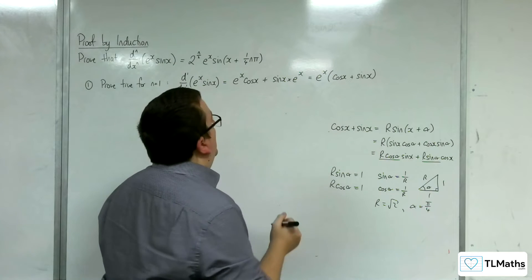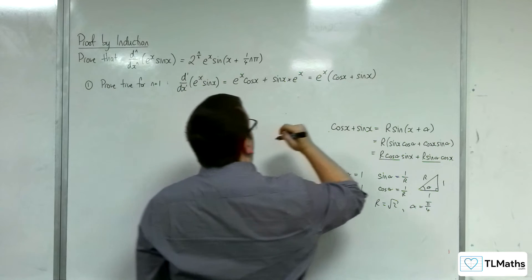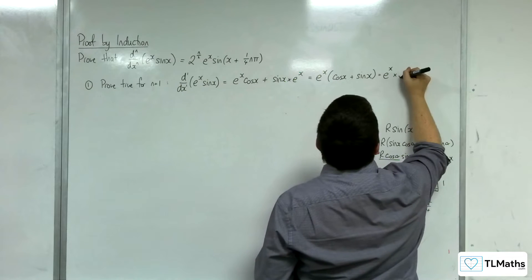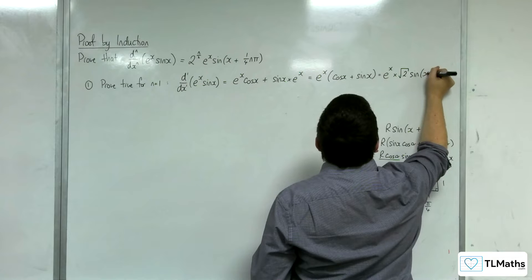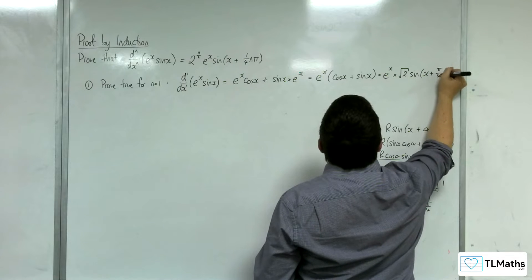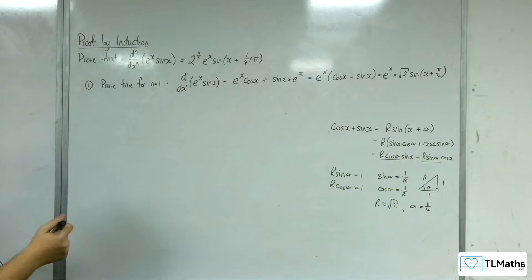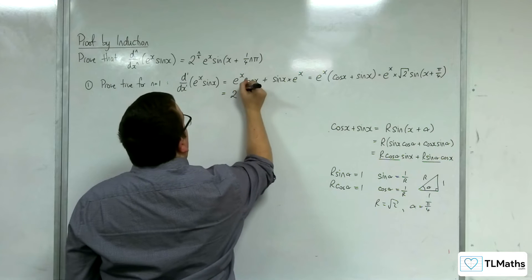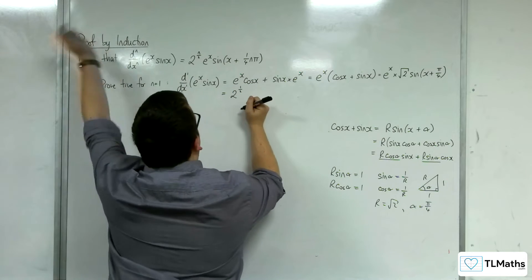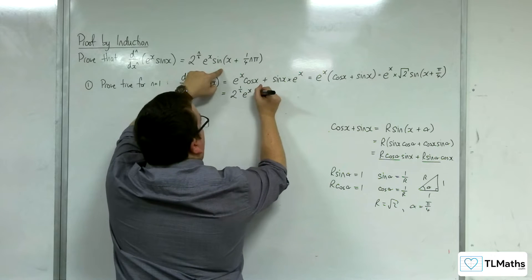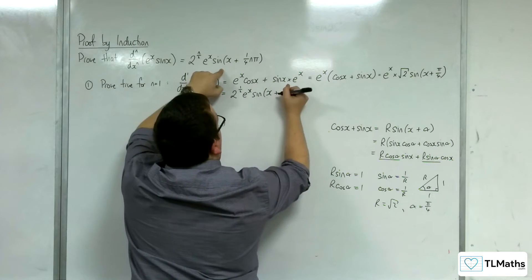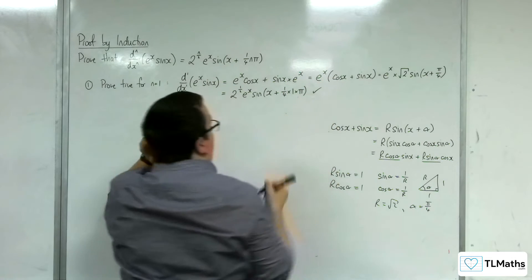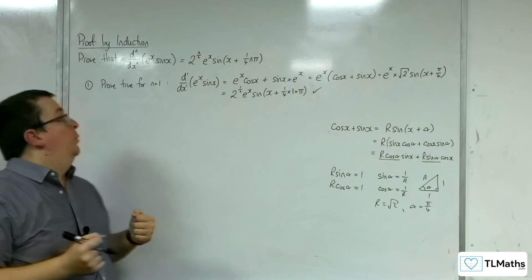So we can rewrite this as e to the x times by root 2 sine of x plus pi over 4. So I can write that as 2 to the power of 1 half e to the x sine of x plus 1 quarter times 1 times pi. And so it is true for n equals 1.